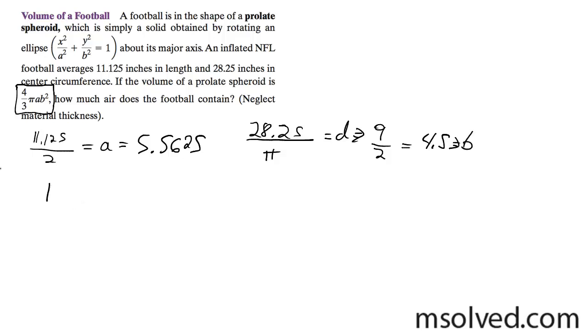All right, so we can go ahead and plug this all in. 4 over 3 times pi times A times 5.5625 times B squared 4.5, and all this is equal to, what I got? 472 inches cubed. That's it.